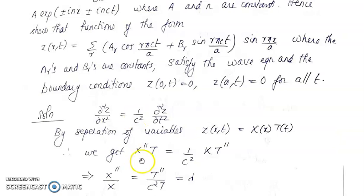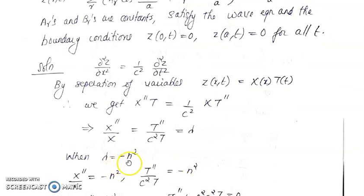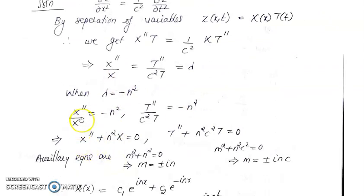We need to find the value of λ. There are three cases: λ = 0, λ positive, or λ negative. To get complex roots and an oscillatory solution, we take λ = −n². This gives X''/X = −n² and T''/(c²T) = −n², which are the two corresponding ODEs.